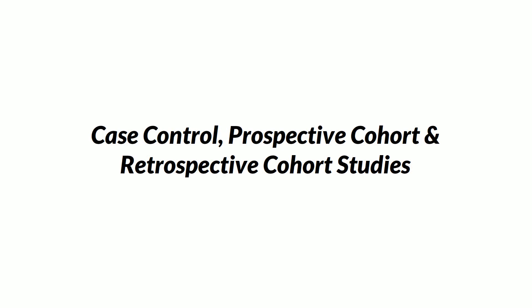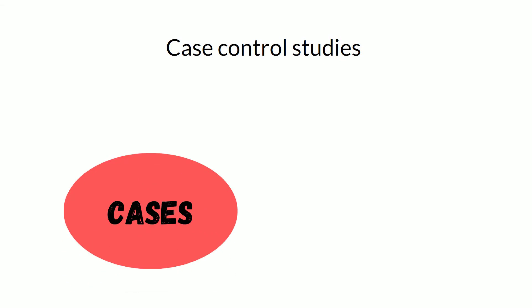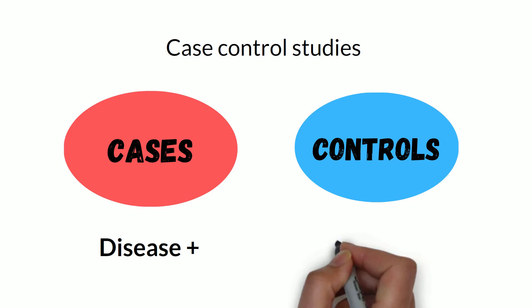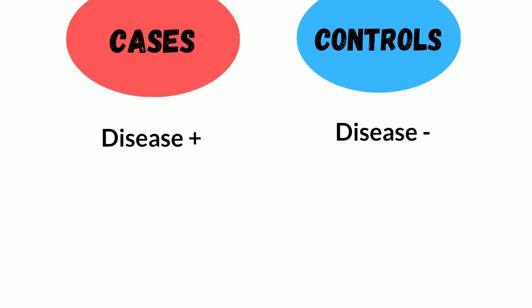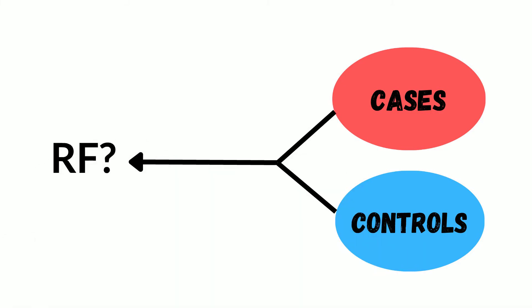The most important thing you need to remember when it comes to these two study types is that in case control studies, you are dealing with cases and controls. Cases are the people who have the disease, while controls are the people who do not have the disease. In other words, you know the disease but you don't know the risk factor.